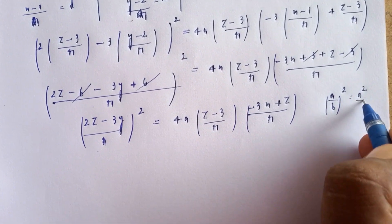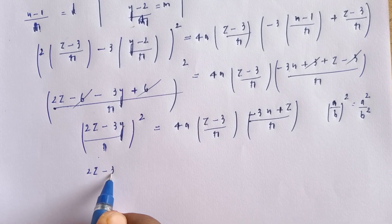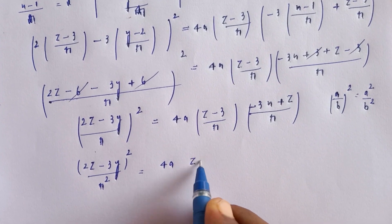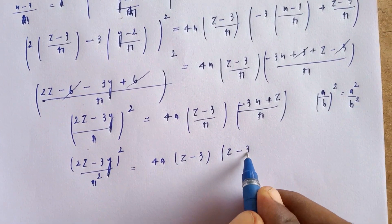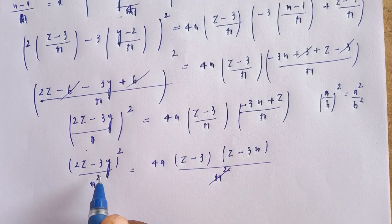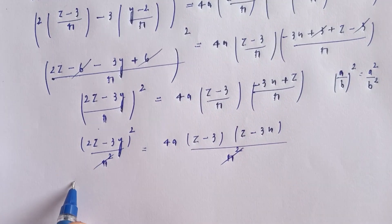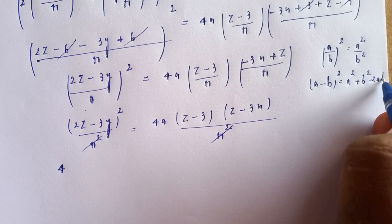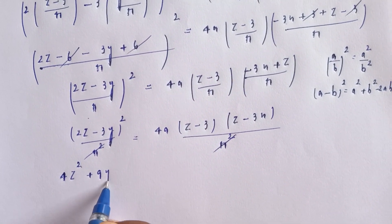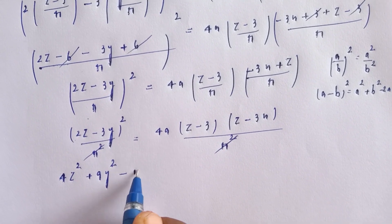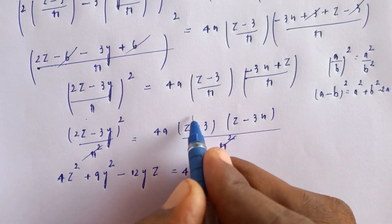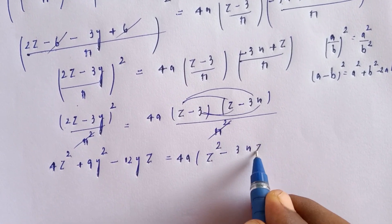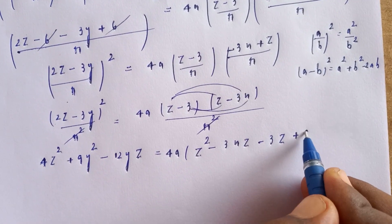R² cancels from both sides. Expanding (2z - 3y)² using the formula (a - b)² = a² + b² - 2ab: we get 4z² + 9y² - 12yz on the left side.